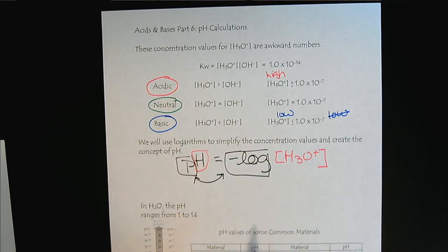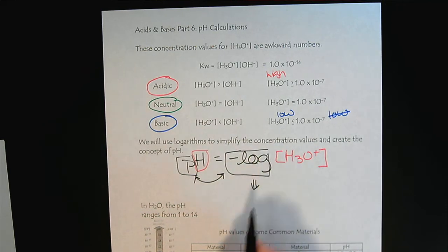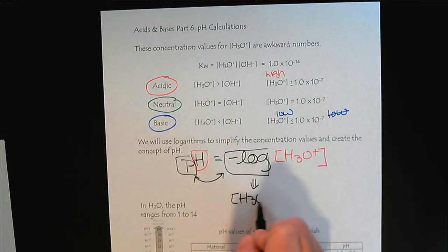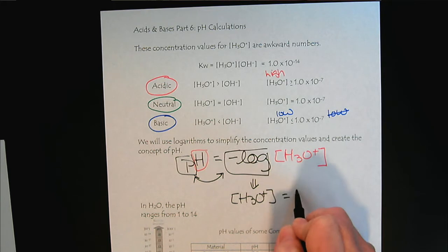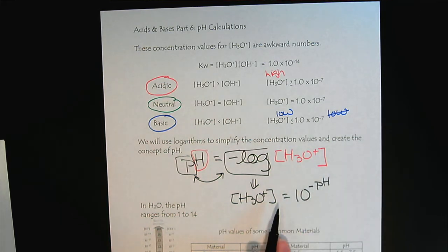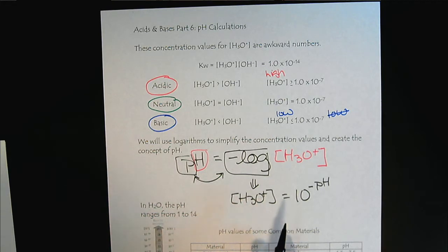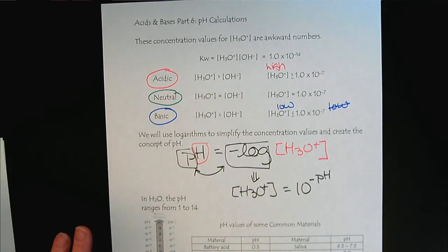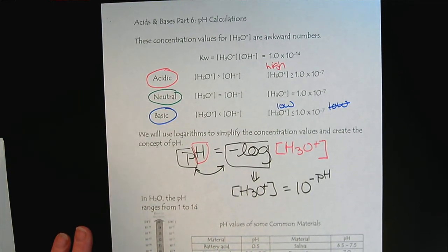Now algebraically, we can rewrite this using our understanding of logarithms. And we could calculate the hydronium ion concentration as 10 to the minus pH, or the anti-log. So if you need help with logarithms, see a tutor or your professor, if it's me, during office hours.